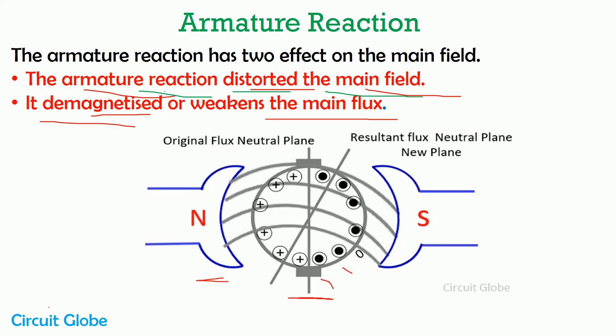In a DC generator, the position of brushes and commutator is decided by the magnetic neutral axis. If the armature reaction weakens the main flux, the position of the magnetic neutral axis will be shifted. So it is quite difficult to know the exact position of the magnetic neutral axis, and if we place the brush in any other position, the brush will get damaged. The armature reaction weakens the main flux, causing the magnetic neutral axis position to shift.